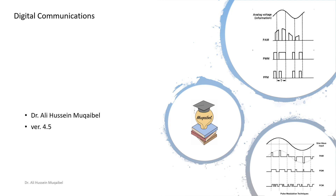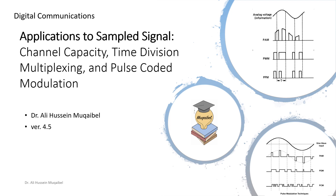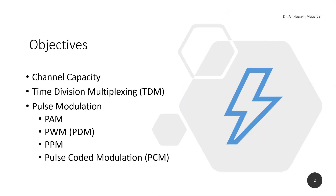The title for this lecture is 'Application to Sampled Signals.' We look at different things that apply only to sampled signals. The agenda is the following: we look at channel capacity, time division multiplexing, and pulse modulation. In pulse modulation there are different techniques: pulse amplitude, pulse width, pulse position, and pulse coded modulation.